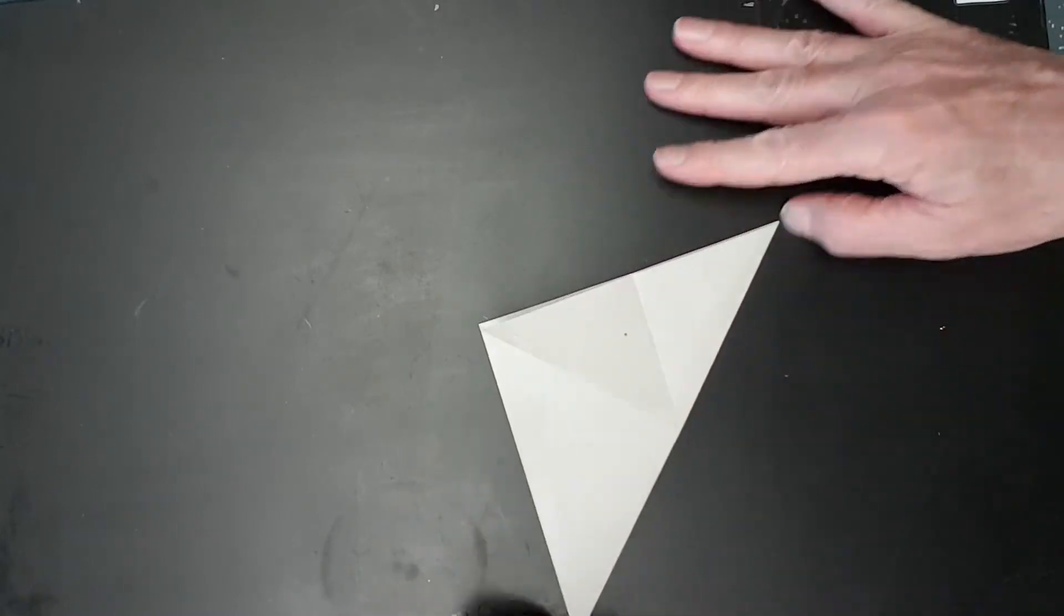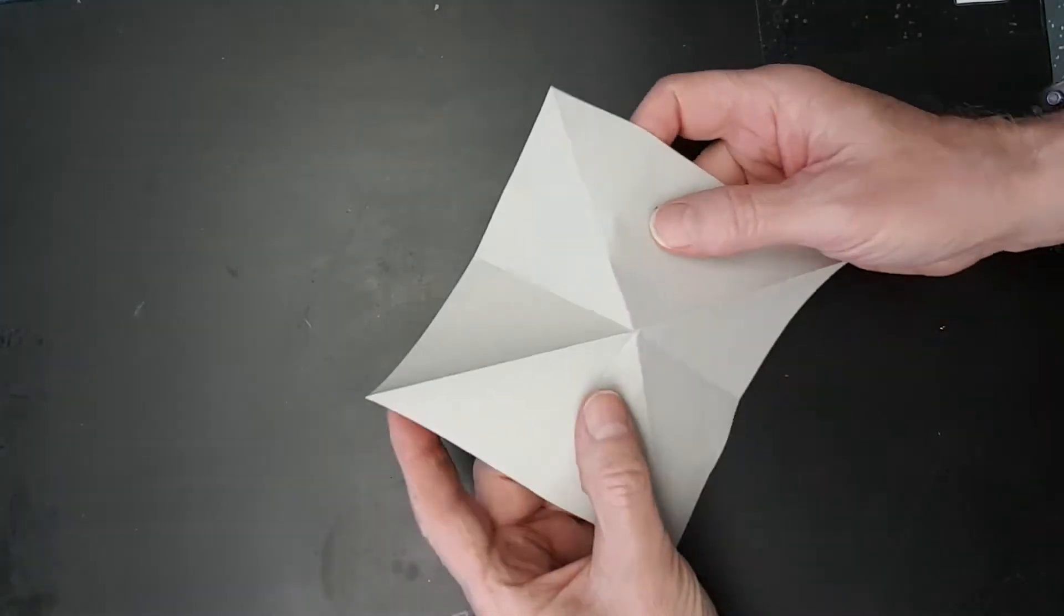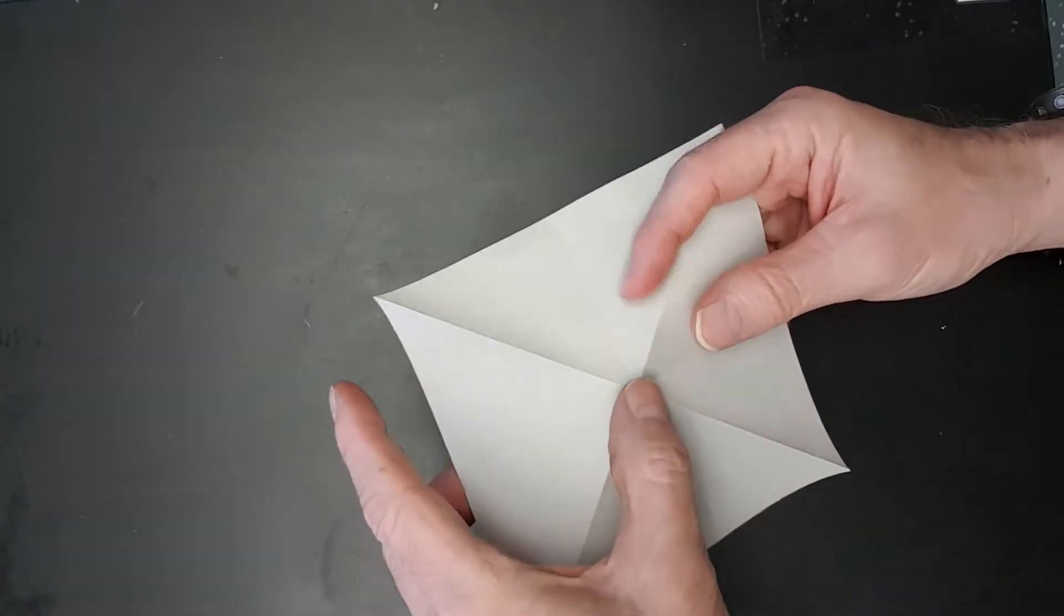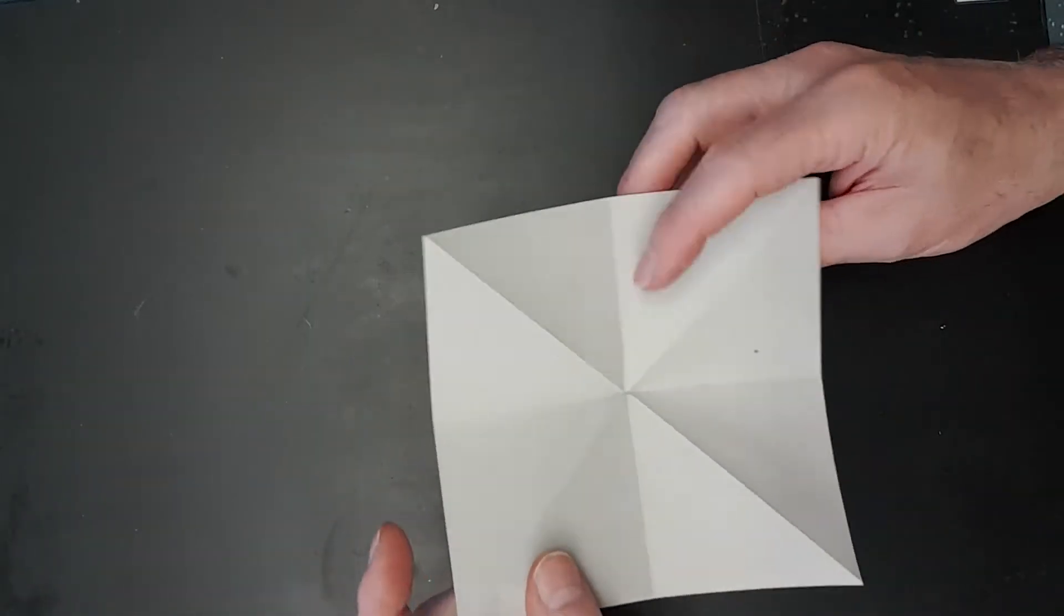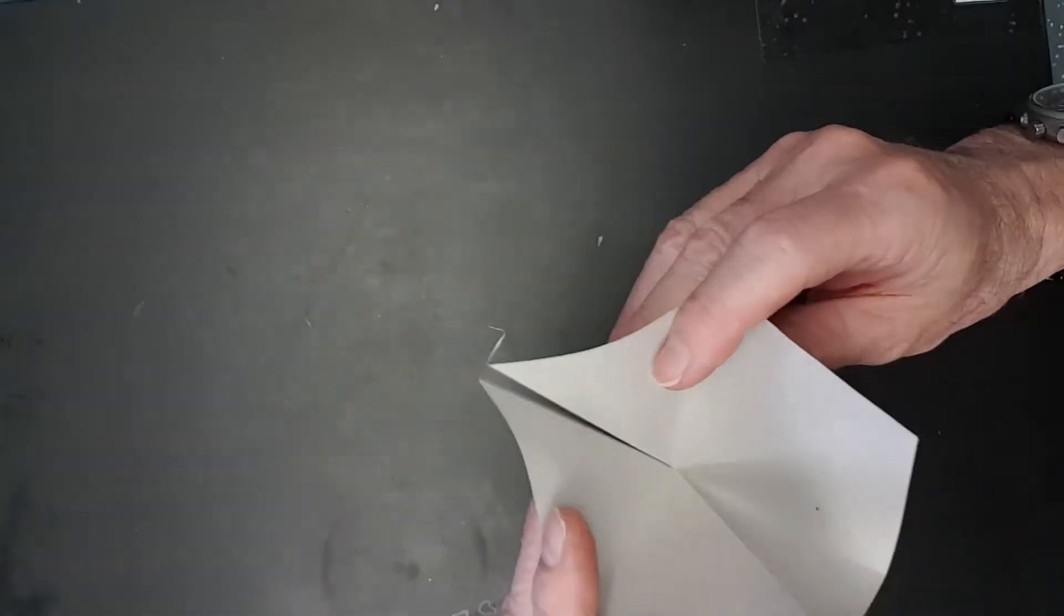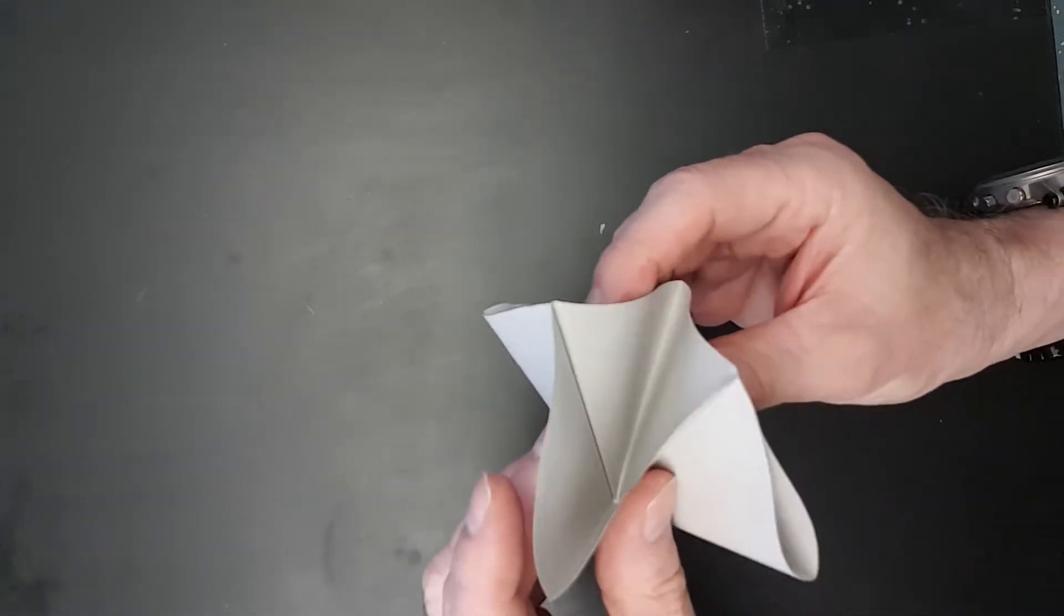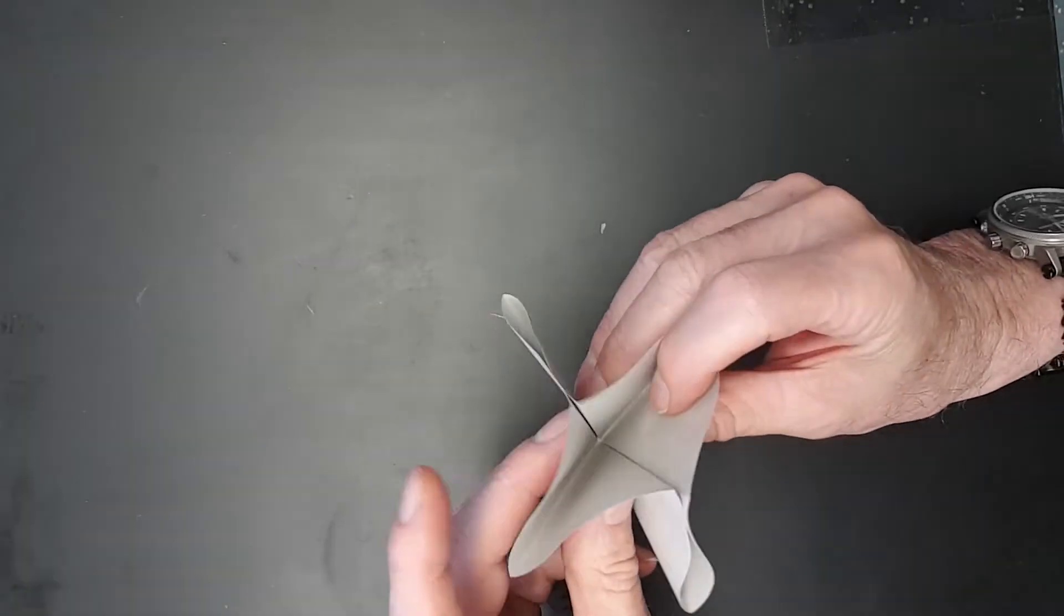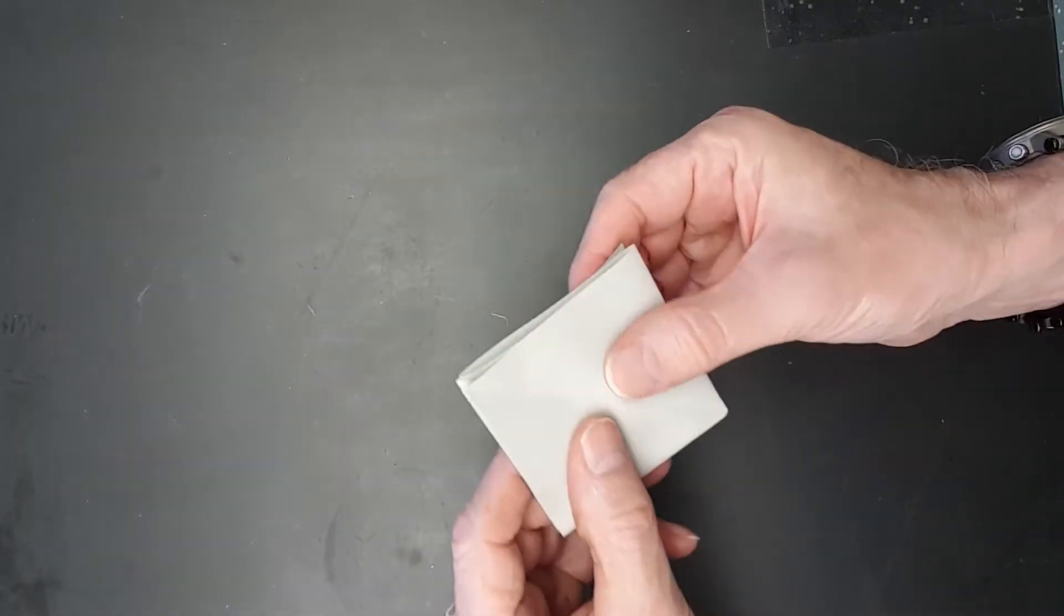Remember, crease it nicely. See how the diagonals are mountains? Well what we're going to do is we're going to flip it inside out though. We're bringing these mountains in and then we're bringing it in like this. Let's do that again. Like this and then we fold it like this.